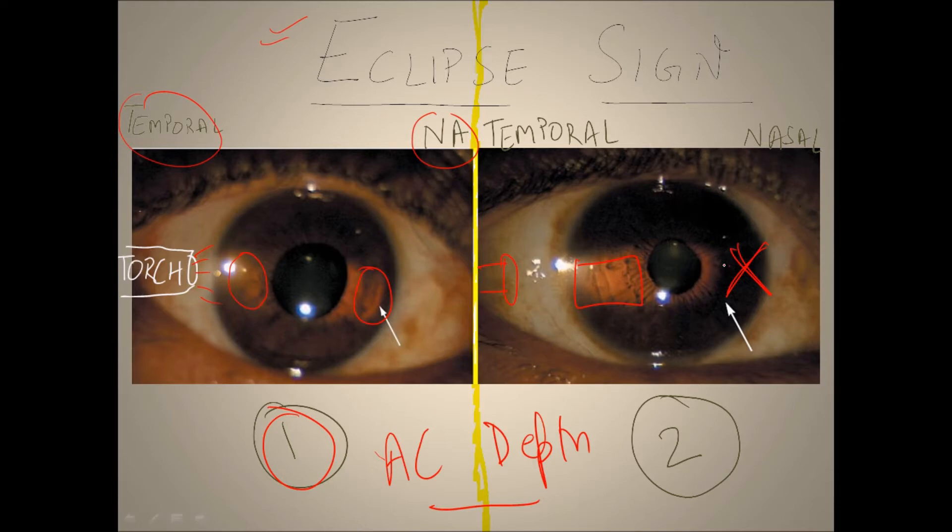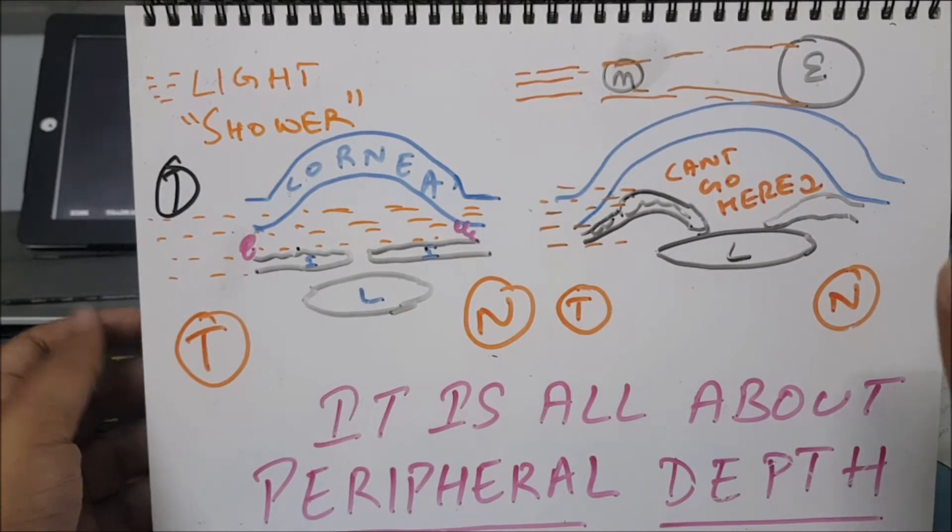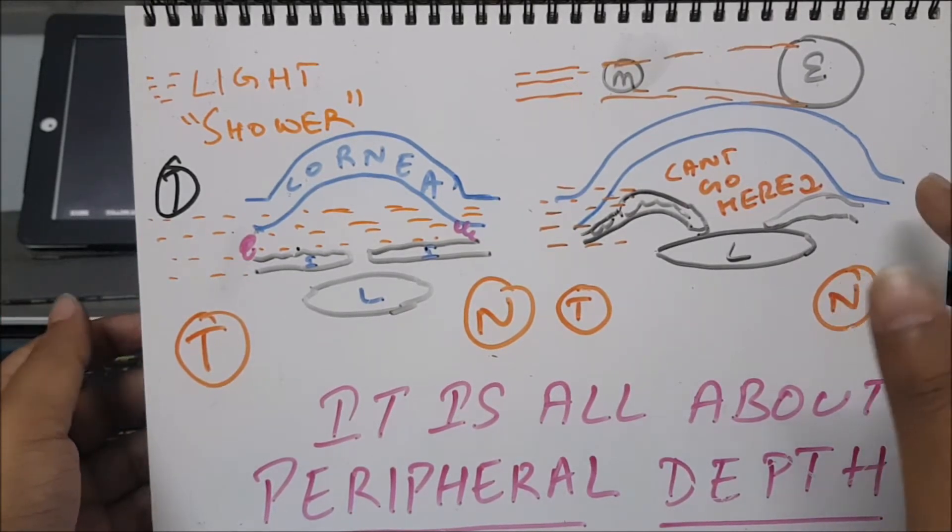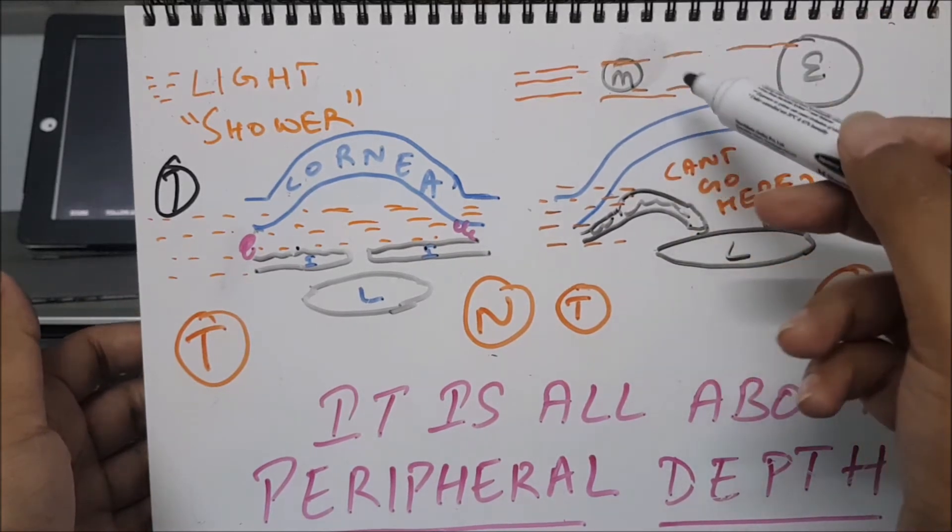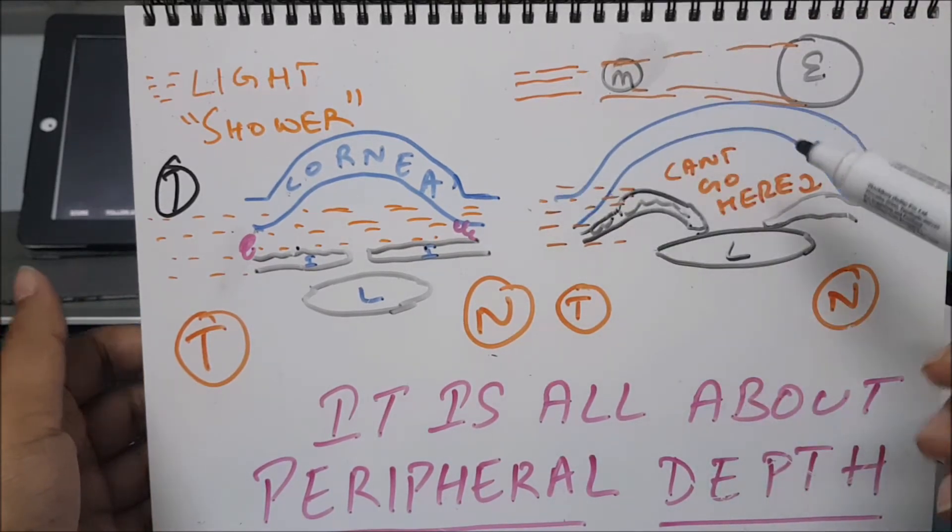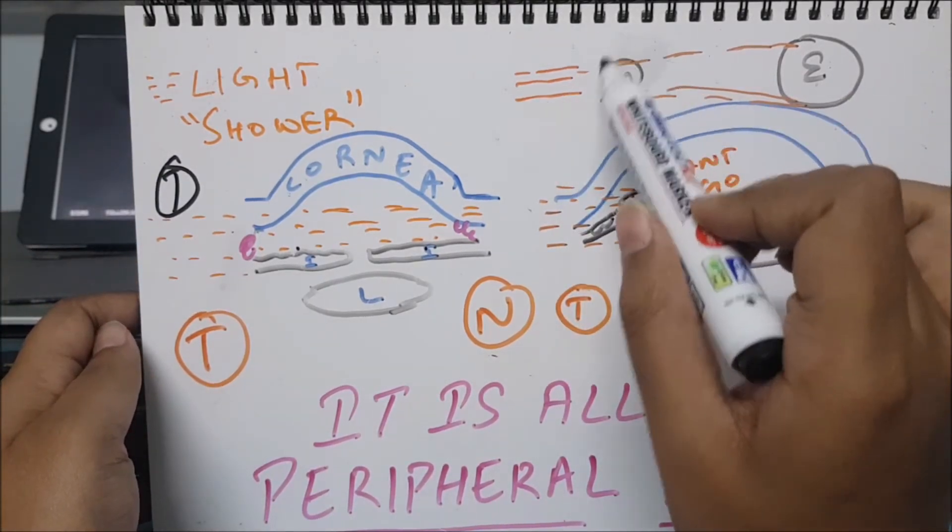Gonioscopy or slit lamp examination is a better modality to assess the anterior chamber depth, but here we are discussing the concept of the shallowness of the anterior chamber and the eclipse sign.